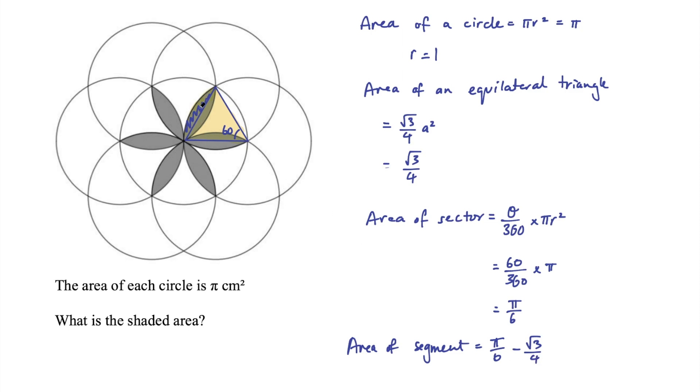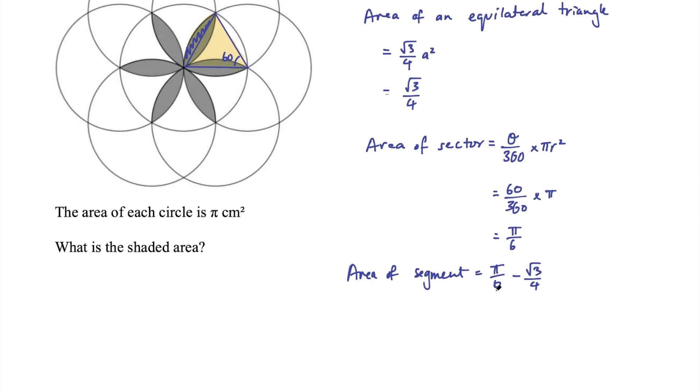Okay, so I have that blue shaded area. How many of those segments do I have? I have one, two, three, four, five, six, seven, eight, nine, ten, eleven, twelve—twelve of those segments, so I need to multiply this by 12 to get the shaded area.